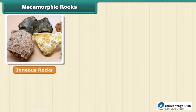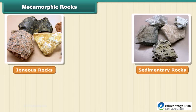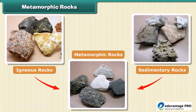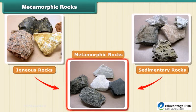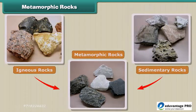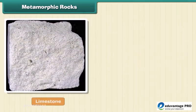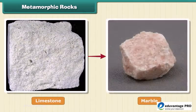The third type of rock is made out of the first two types. These are metamorphic, or changed, rocks. Igneous and sedimentary rocks can change into metamorphic rocks under great heat and pressure. For example, clay changes into slate and limestone into marble.